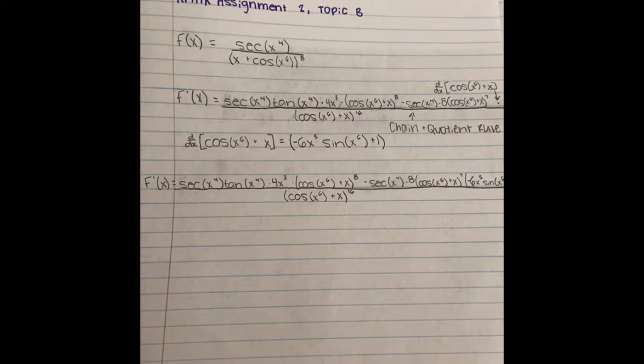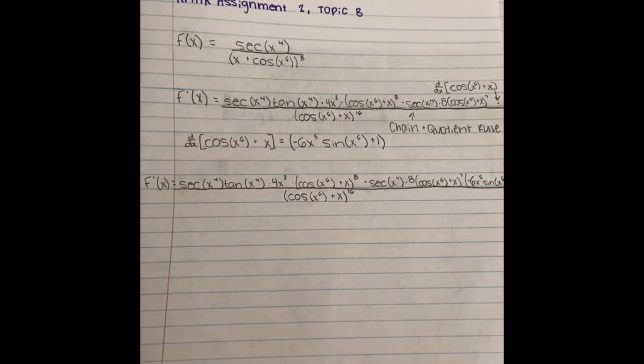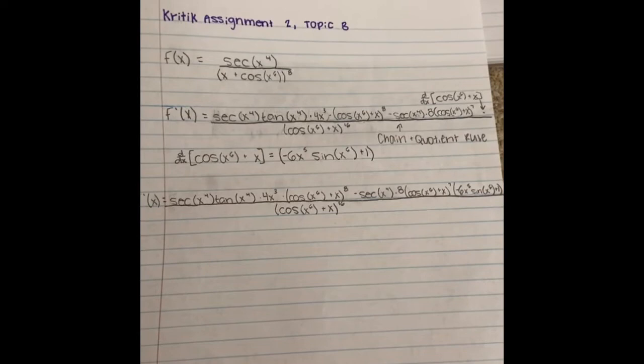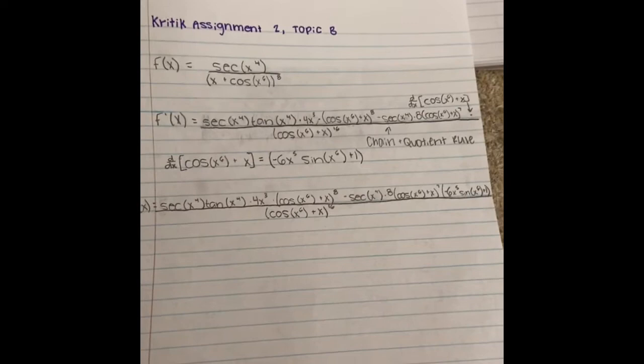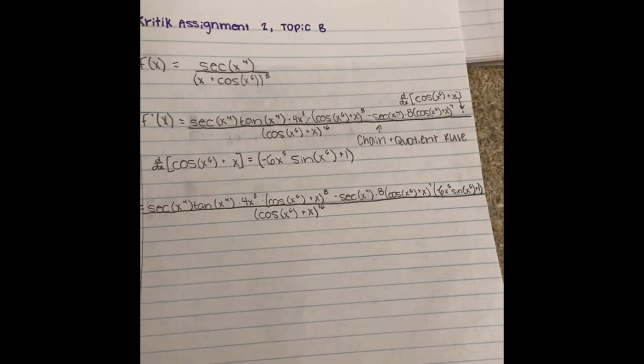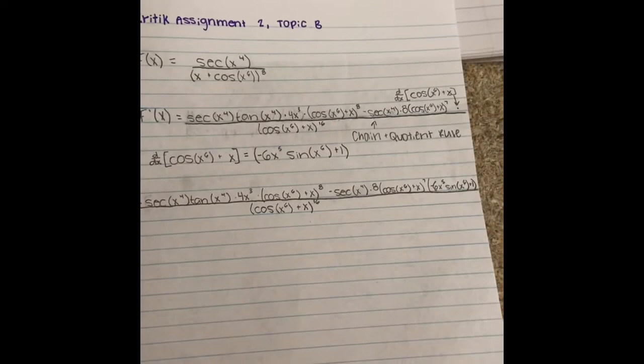The full derivative is: secant x to the fourth times tangent x to the fourth times 4x cubed times cosine x to the sixth plus x, all to the power of eight, minus secant x to the fourth times eight times cosine x to the sixth plus x, all to the power of seven, times negative six x to the fifth times sine of x to the sixth plus one, all over cosine x to the sixth plus x, all to the sixteenth power.